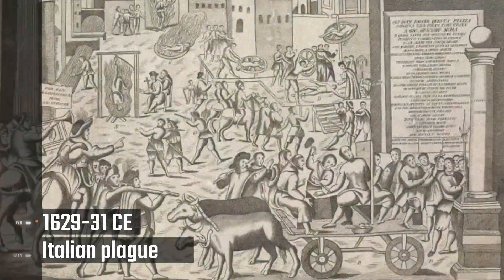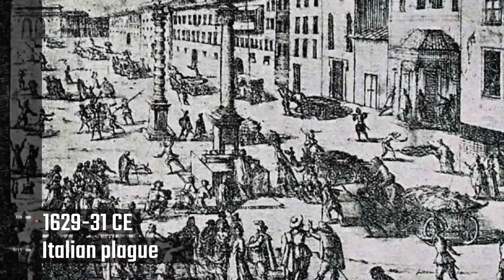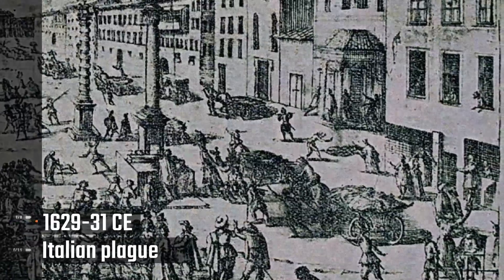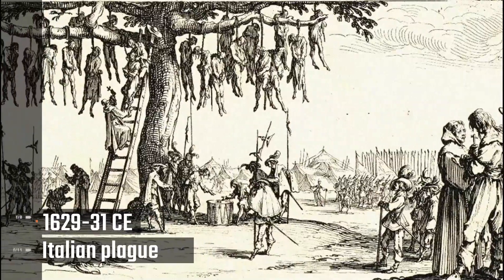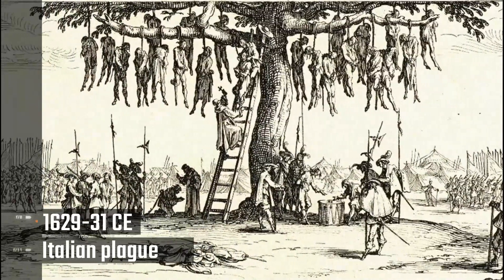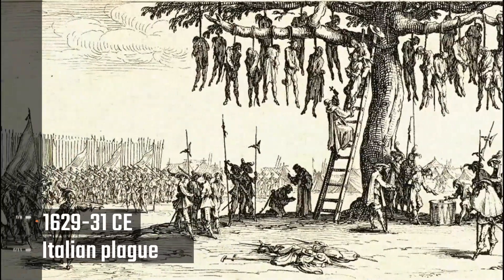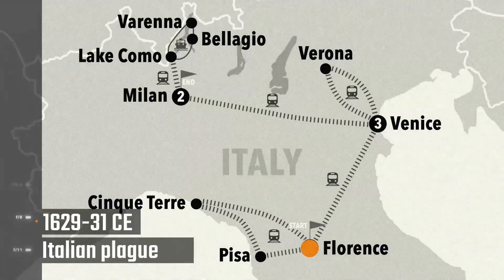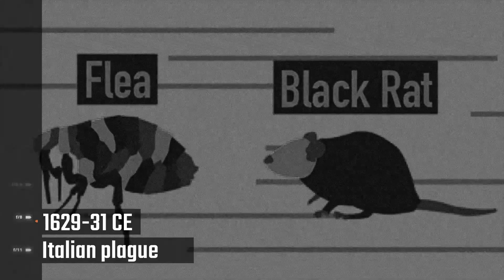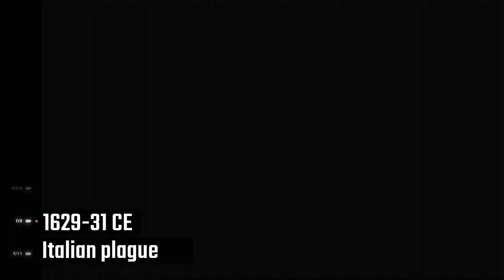Italian Plague, 1629 to 1631. The Italian Plague was a series of outbreaks of bubonic plague in northern Italy that began in 1629, when troops from the Thirty Years' War carried the infection into the Italian city of Mantua. Over the next two years, the plague snaked its way across the countryside, striking the major cities of Verona, Milan, Venice, and Florence. The Yersinia pestis bacteria, carried by rats and fleas, claimed one million lives according to estimates.